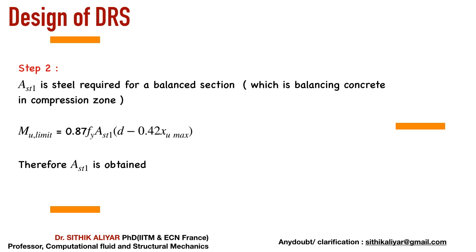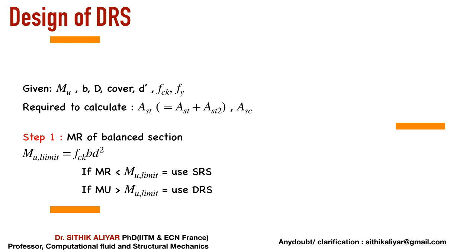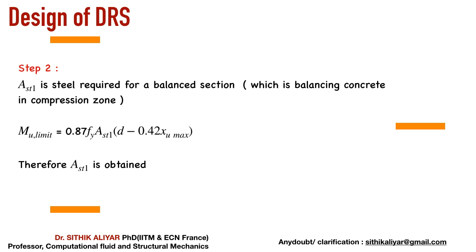Coming back: AST1 is the steel required for a balanced section. You use the same formulas from the singly reinforced section. MU limit = 0.87 × FY × AST1 × (D − 0.42 × XU_max), and substituting XU_max = 0.48D or 0.53D gives the formula 0.138 × FCK × B × D². Using that, you know MU limit. Step two: substitute all values to get AST1 directly. This is exactly what was done in previous example problems.